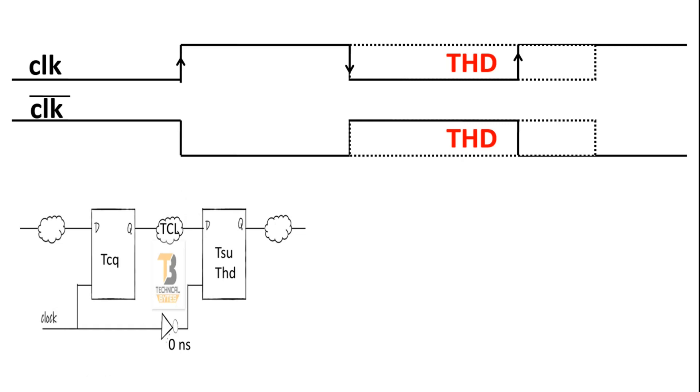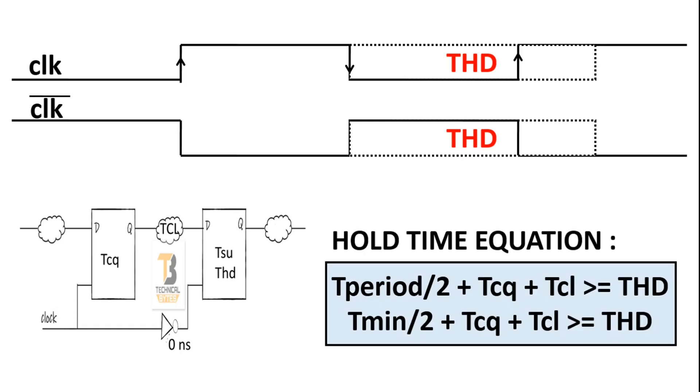Now, let us see the final hold time equation. This is the final hold time equation. T_period/2 plus Tcq plus Tcl must be greater than or equal to THD of the second flip-flop. Then there will be no hold time violations.